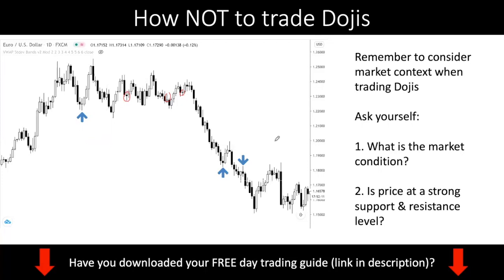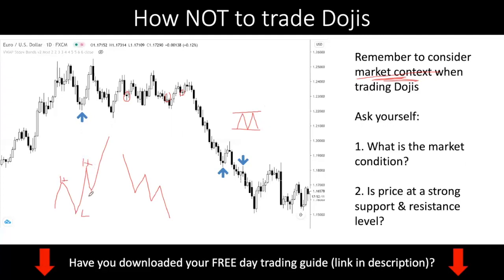It's very important that you always consider the market context. What do I mean by market context? Is price in an uptrend, a downtrend, or is it consolidating? In an uptrend, you have a higher high and a higher low. When you see this, price is in an uptrend. In an uptrend, you want to buy dojis at support — let's say price comes down to a support, you buy a doji there. You do not want to do counter-trend dojis like trying to catch the top.